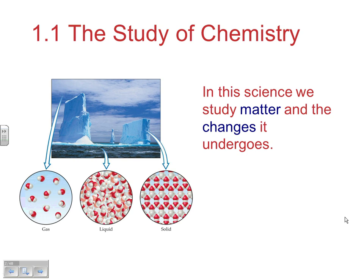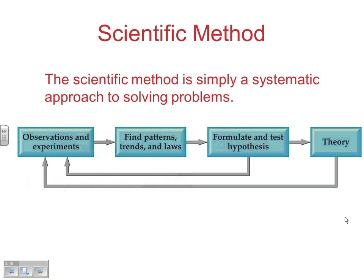Chemistry as a whole is really the study of matter and the changes it undergoes. One of the core ideas behind most scientific research is the concept of scientific method, which is a systematic way to problem solve where you make observations or come up with rudimentary experiments from which observations can be made. From those observations, you look for trends or patterns and derive a hypothesis.